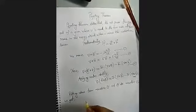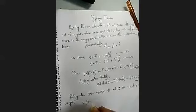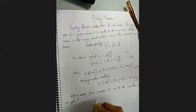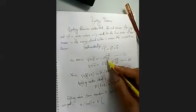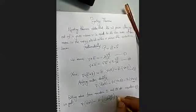Putting values from equations one and two into equation three: the first term, del dot (E cross H) equals H dot (del cross E). Instead of del cross E, we put the value: minus mu del H by del T. Again, the second term: minus E dot (del cross H). The value of del cross H is sigma E plus epsilon del E by del T.